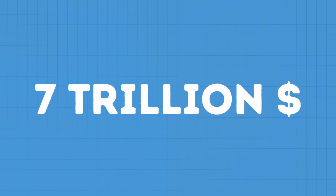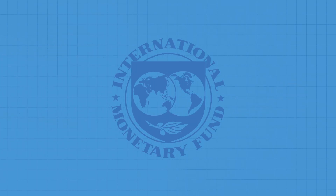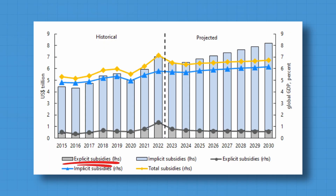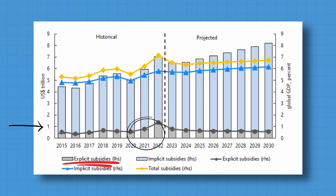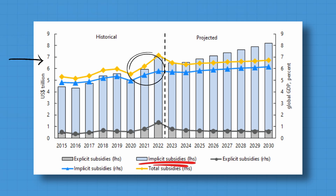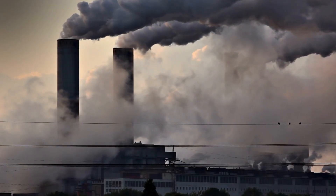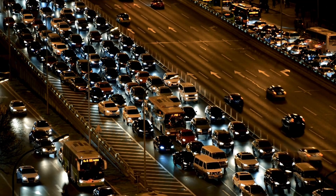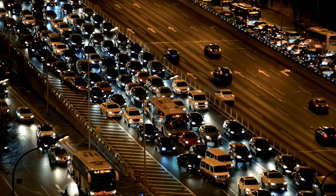What about that 7 trillion number we sometimes see? That's from the IMF, which also incorporates externalities such as climate change damages, health issues from pollution, and road traffic problems. Here you can see both explicit and implicit subsidies. The explicit ones are around 500 billion, but if we add the implicit ones, the number skyrockets to more than 7 trillion a year. In total, around 30% comes from climate change, another 30% from local air pollution, 18% are direct subsidies, and 17% from road externalities such as congestion and accidents.